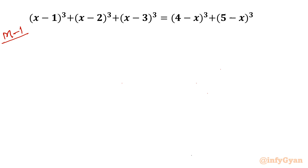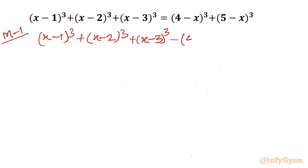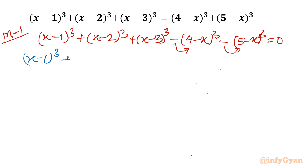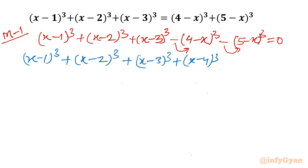Let me take all the terms to the LHS first. So (x−1)³ + (x−2)³ + (x−3)³ minus (4−x)³ minus (5−x)³ equals 0. Now I will insert this minus into the brackets so it will be symmetrical in x and constant terms. This gives (x−1)³ + (x−2)³ + (x−3)³ + (x−4)³ + (x−5)³ = 0.